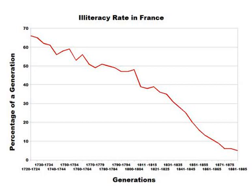Literacy is popularly understood as an ability to read and write in at least one method of writing, an understanding reflected by mainstream dictionaries. In this view, illiteracy would be considered to be the inability to read and write. Some researchers suggest that the term literacy can be historically divided into the period before 1950, when literacy was understood solely as alphabetical literacy and after print acquisition.